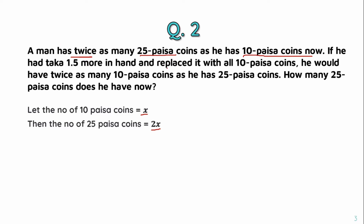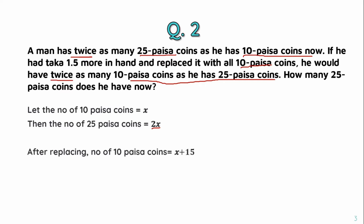If he had 1.5 more in hand and replaced with 10-paisa coins, he would have twice as many 10-paisa coins as he has 25-paisa coins. Setting up: 25-paisa coins become 2x minus some adjustment.